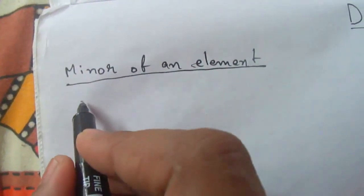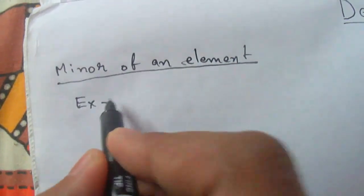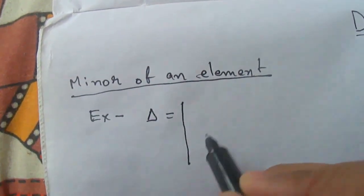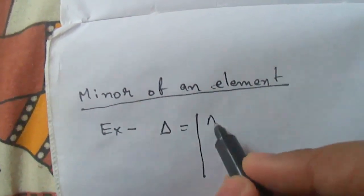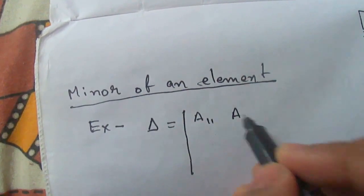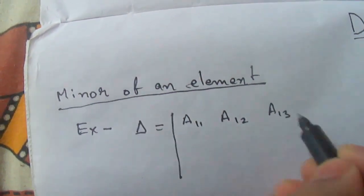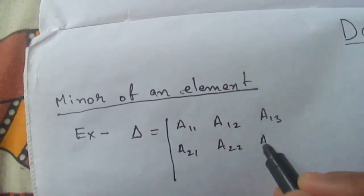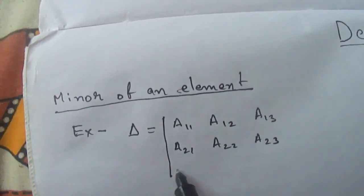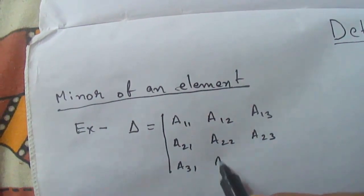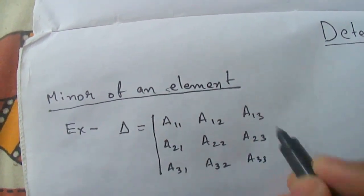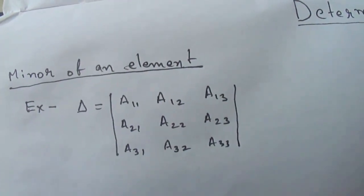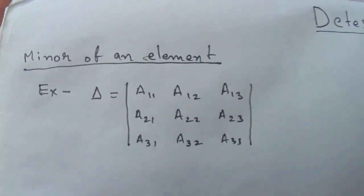Let us learn this by an example. Suppose we have a determinant: |a11 a12 a13 / a21 a22 a23 / a31 a32 a33|. Now we have this determinant and we have to calculate the minor of an element.